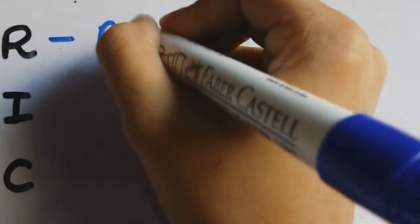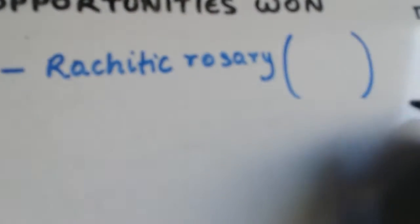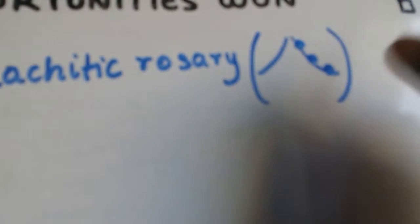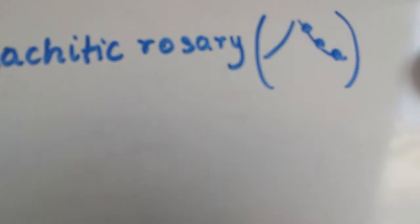R is for rachitic rosary which is seen in patients with Rickets. Basically the anterior chest wall and the costochondral junctions become very prominent and this leads to an appearance of rosary. That is known as rachitic rosary.